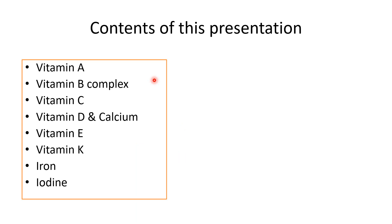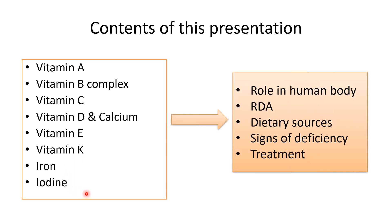In this presentation we'll be discussing vitamin A, B complex, C, vitamin D and calcium together — since their deficiency features overlap — vitamin E briefly, vitamin K, iron, and iodine. For all of these we will discuss their physiological role, recommended dietary allowance (RDA), dietary sources, signs of deficiency, and treatment.